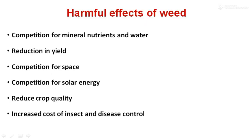The first harmful effect of weeds is competition for mineral nutrients and water. Weeds are more vigorous in growth than crops and consume large amounts of nutrients, causing heavy losses in yield. On average, weeds in curry crops remove 46.6 kg nitrogen per hectare, 12.8 kg phosphorus per hectare, and 73.3 kg potassium per hectare. The essential NPK nutrients are very rapidly absorbed and taken up by weed plants, causing losses in agricultural produce.